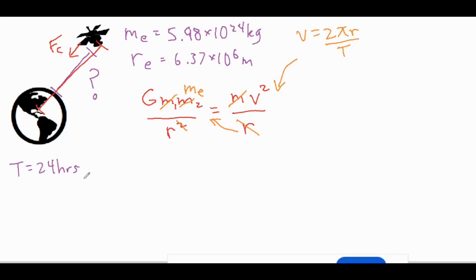And what we're going to want to do is we're going to want to convert that into seconds. So we're going to take 24 hours and then one hour is 60 minutes and then we have one minute equivalent to 60 seconds.